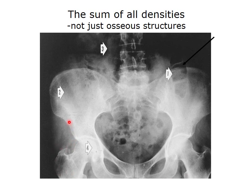So it's important to realize that even though we're doing a radiograph and think we're primarily viewing bone, everything will show up depending on its radio density. Because bone has high radio density and is not very radiolucent, it shows up very brightly.